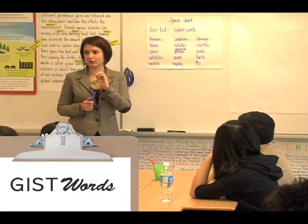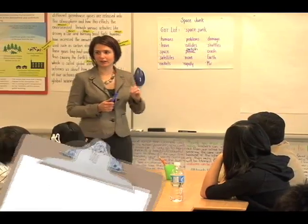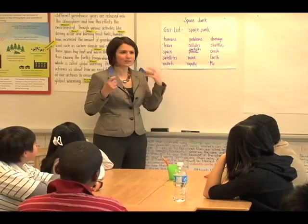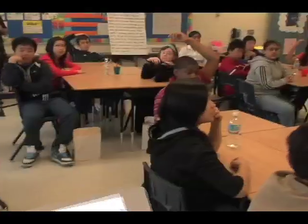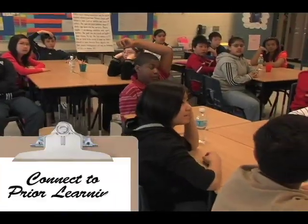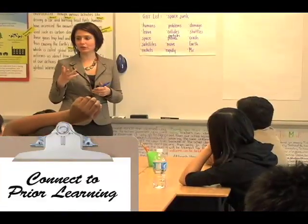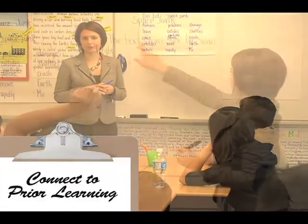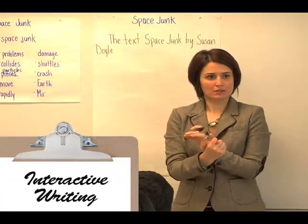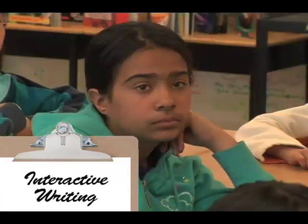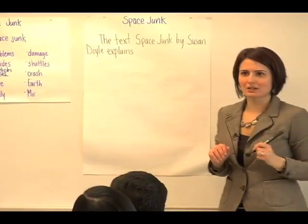Now remember our anchor chart on what an effective summary is. So what is the first thing that it says a summary should have? To include the title and the author. That's right. I'm going to include the title and author. Space Junk by Susan Doyle. So I have the name of the text and the author. Now I'm going to include the main idea of the text — the overall main idea. What is it that it explains?